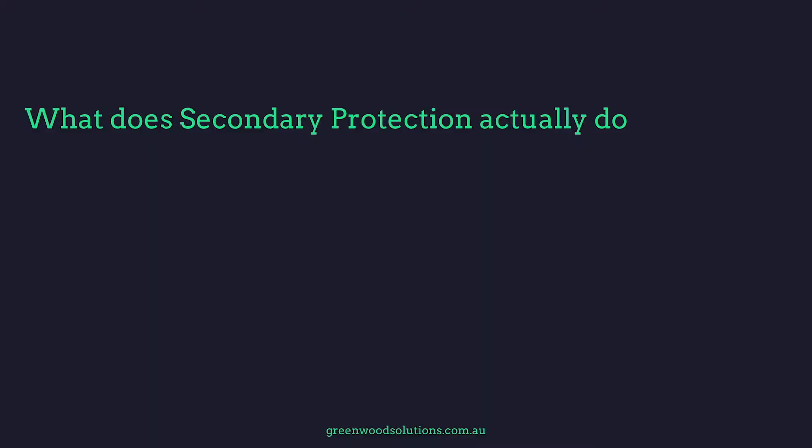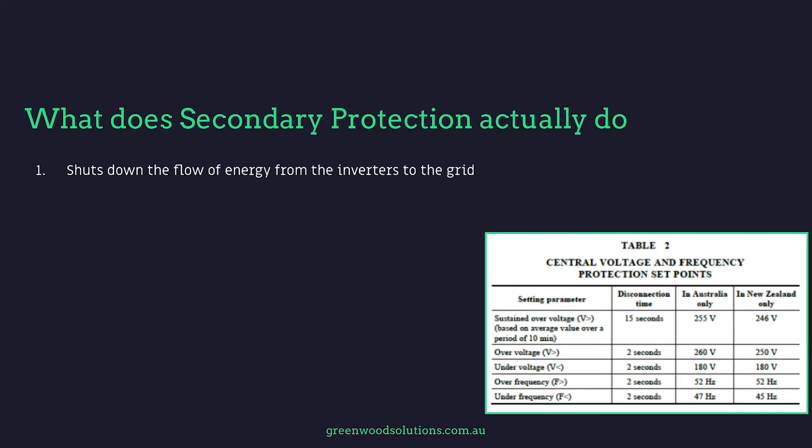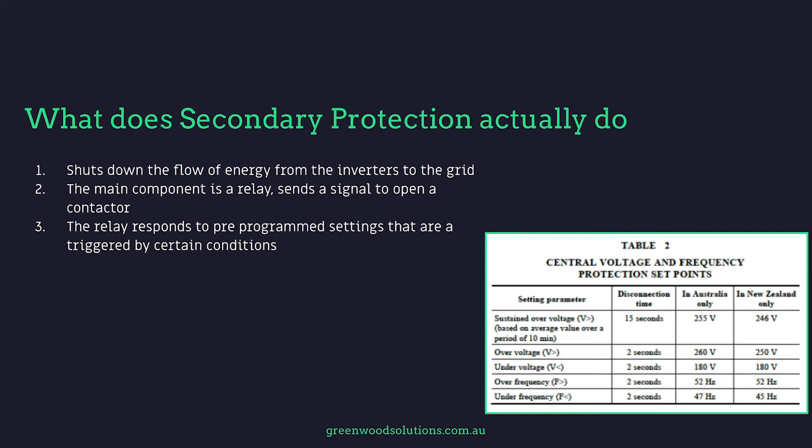So what does it actually do? Well, it shuts down the flow of energy from the inverters to the grid. The main component is a relay that sends a signal to open a contactor. The relay responds to pre-programmed settings that are triggered by certain conditions — for example, over voltage, under voltage, over frequency and under frequency.